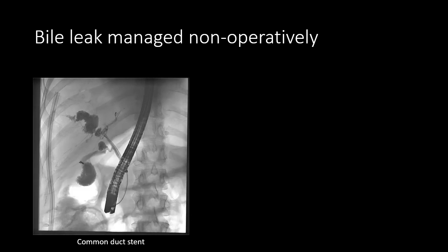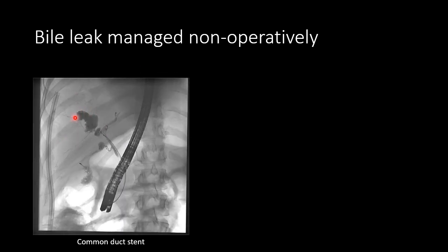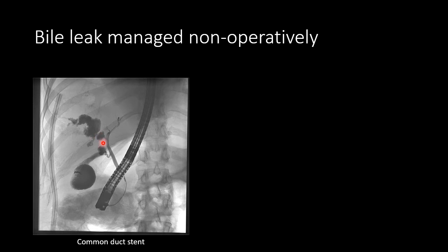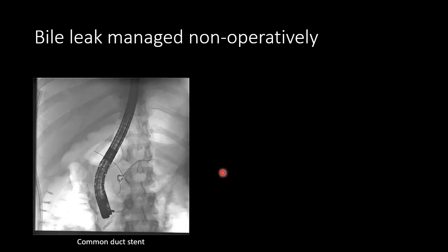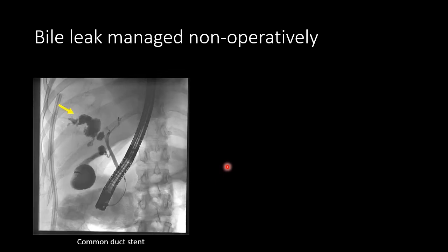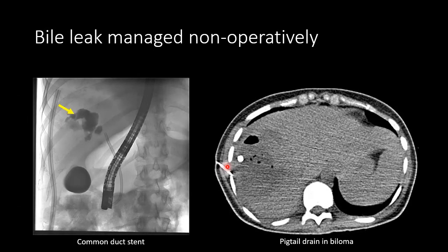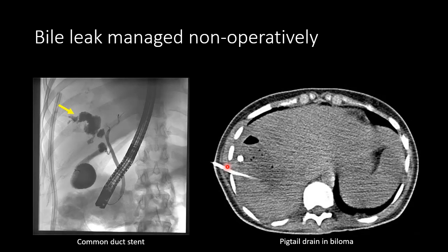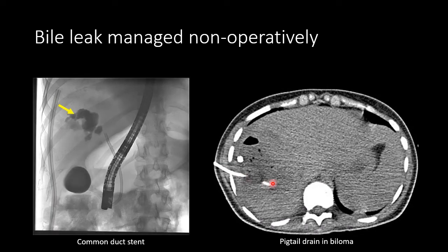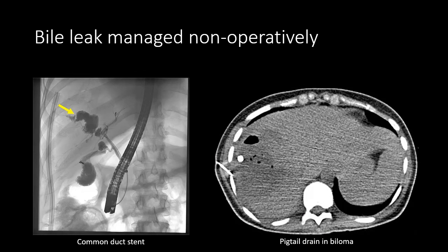The bile leak was managed non-operatively. The patient went to ERCP, the bile duct was cannulated, and a large area of contrast accumulation within the biloma was demonstrated, indicating disruption of the biliary tree. A stent was placed to allow for improved flow. The patient also went to interventional radiology for percutaneous drainage of the biloma, with fluoroscopic CT images showing placement of a pigtail catheter into the biloma — all managed without surgery.